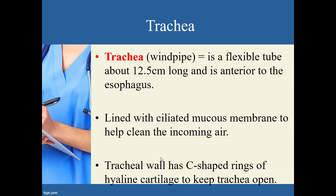Next is the trachea, also known as the windpipe — about 12 centimeters long and anterior to the esophagus, so it's the tube you can easily feel in the front of your throat. The esophagus sits behind it as a collapsible tube. The wall of the trachea is held open by C-shaped rings of hyaline cartilage, and the length of the trachea is lined with ciliated mucous membranes to help capture and trap particles.